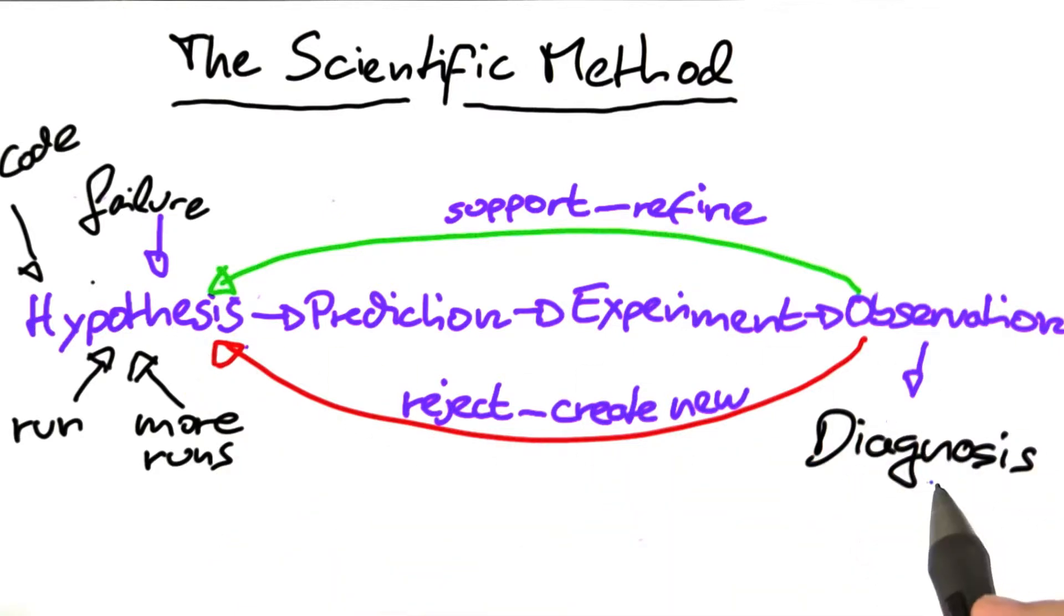We have repeated the process until we came up with a diagnosis that is a theory that is consistent with our earlier observations and that also predicts future observations, in our case, the correct behavior.